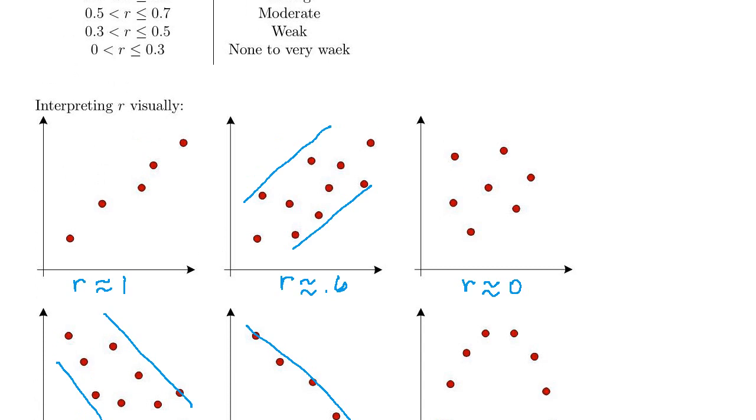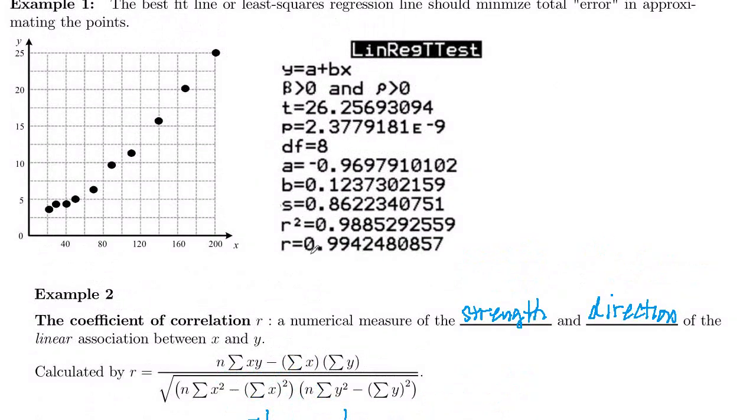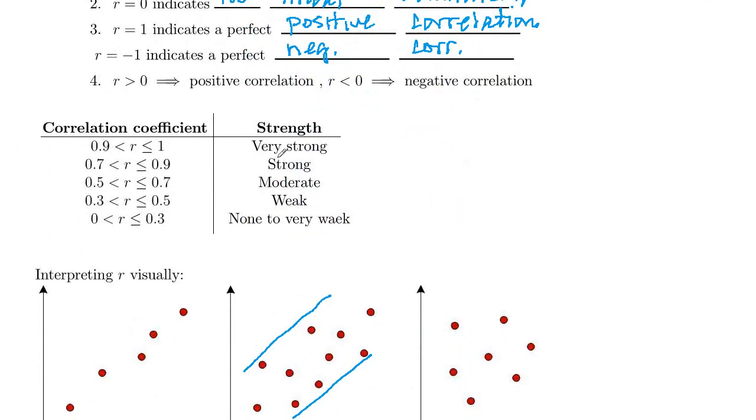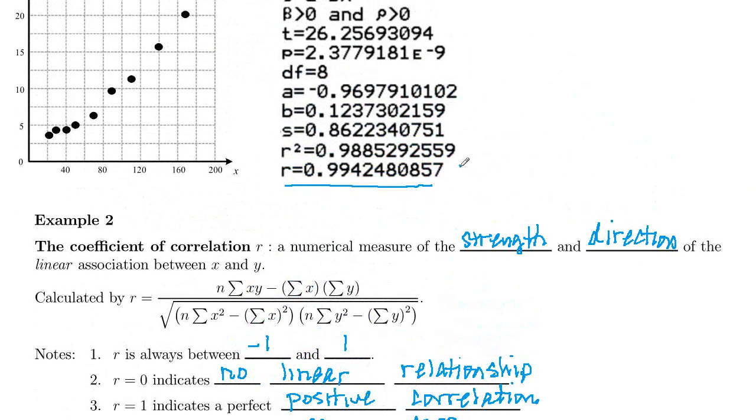So if we go back to the data from the Netflix example up here, we see our correlation coefficient right here, 0.99. And so that means that we have a positive relationship. And then 0.99, if you go back down to our table, that is in this range, very strong. So this is going to be a very strong positive linear correlation.